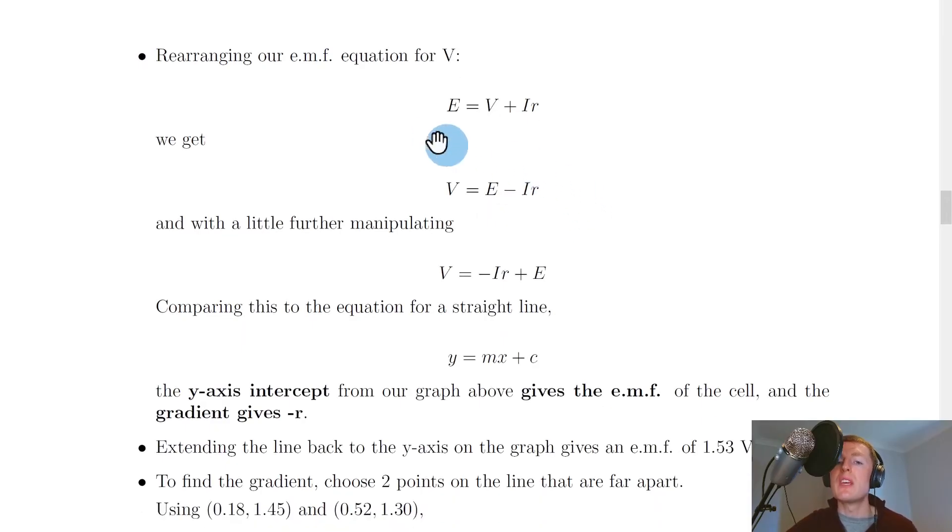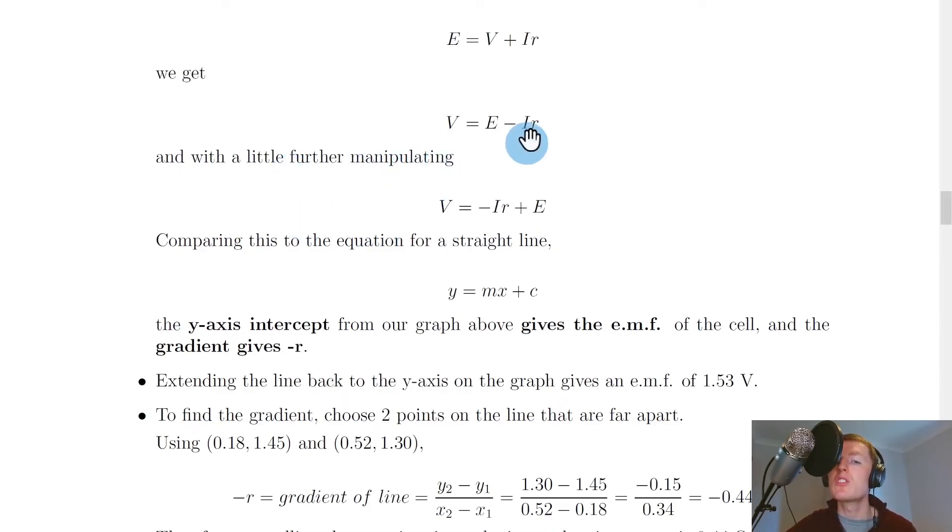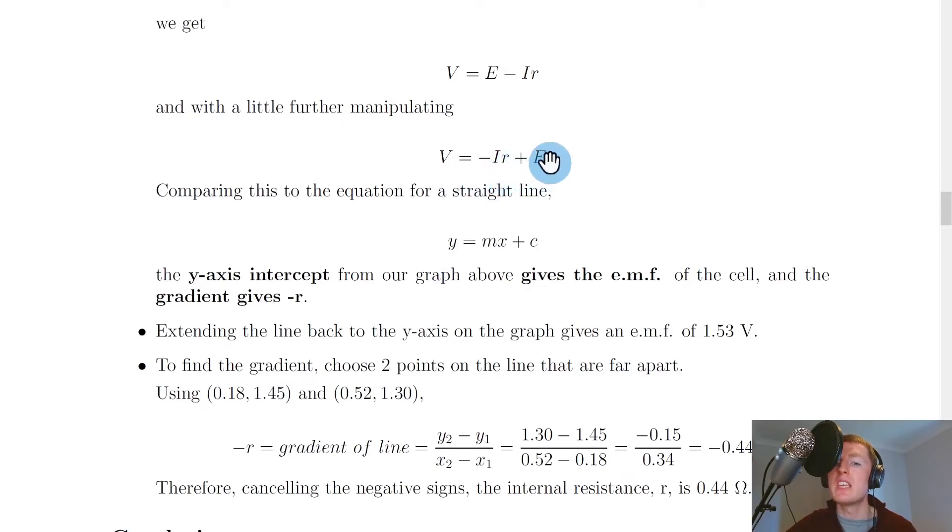So if we start with e equals v plus ir then we get v equals e minus ir just by subtracting ir from both sides. So I get v equals e minus ir and then with a little further manipulating just swapping these two terms round we get v equals minus ir plus e.